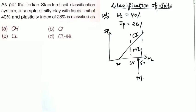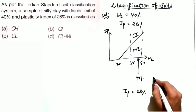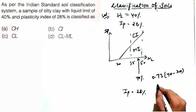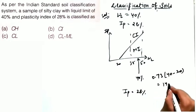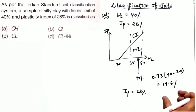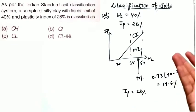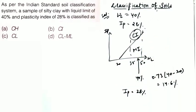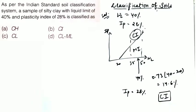With IP = 28%, calculate the A-line IP: 0.73 × (40 − 20) = 14.6%. The given soil's IP of 28% is greater than the A-line IP of 14.6%, so the soil lies above the A-line. Therefore it is again classified as CI — clay soil of intermediate plasticity.